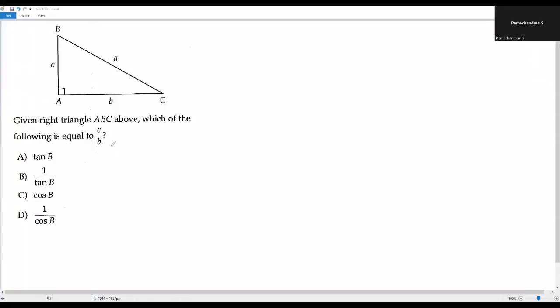Here we have an SAT math problem. Let's go over the information. We have a right triangle ABC, right angle at vertex A. Given right triangle ABC above, which of the following is equal to C over B?